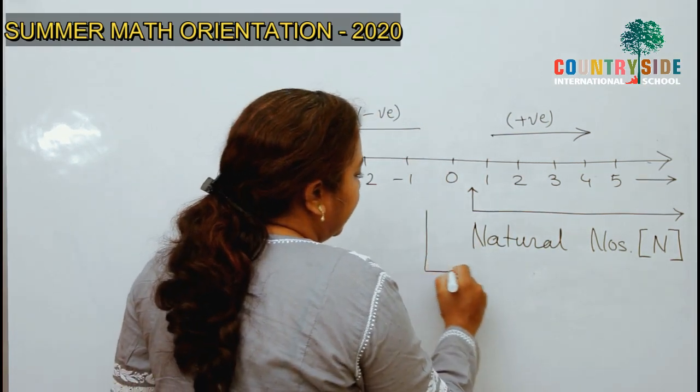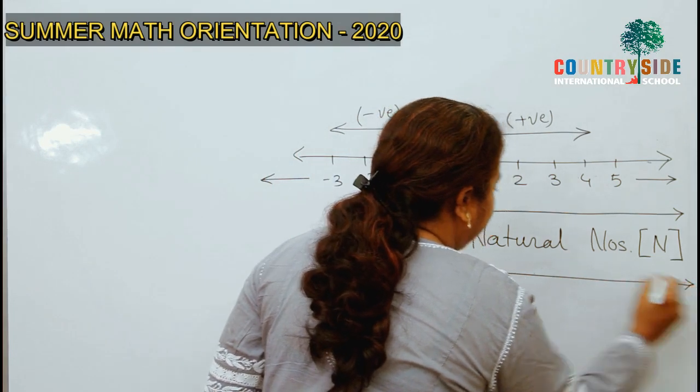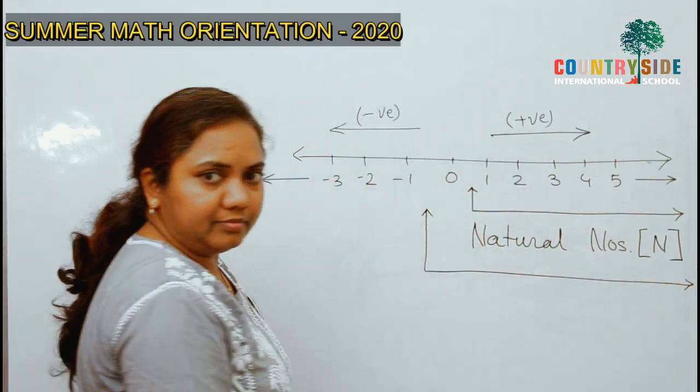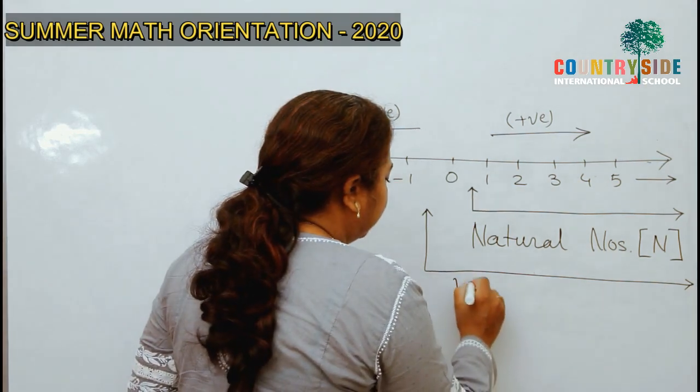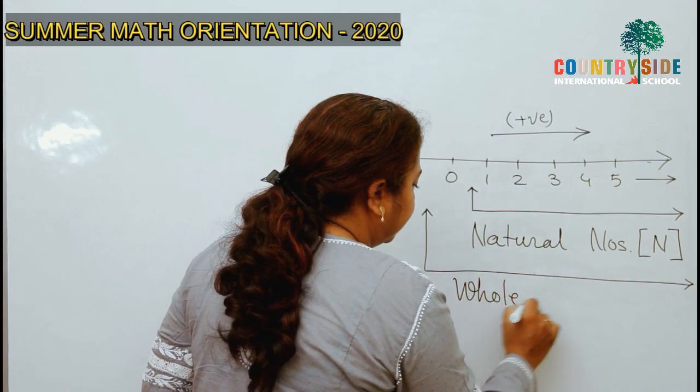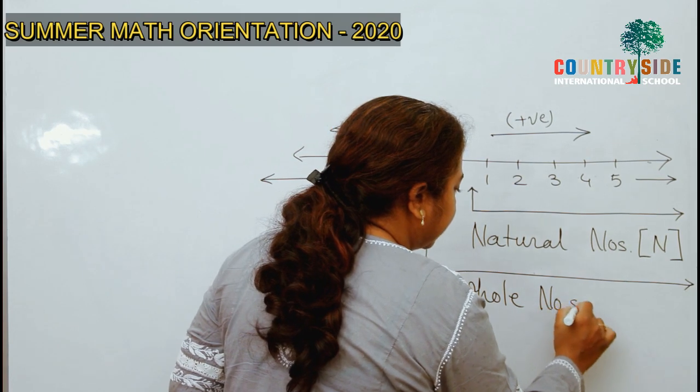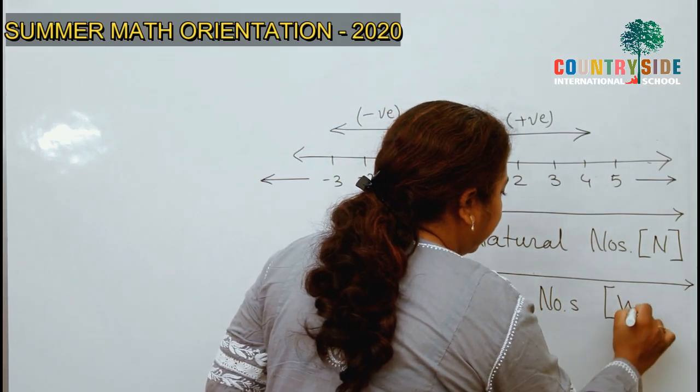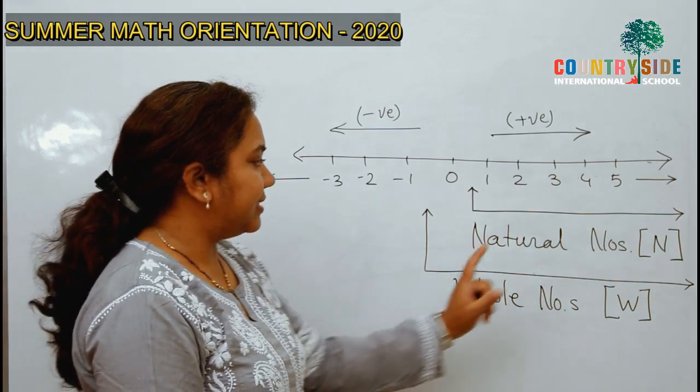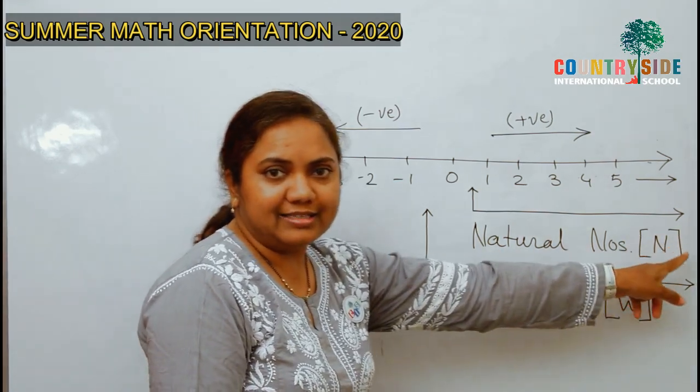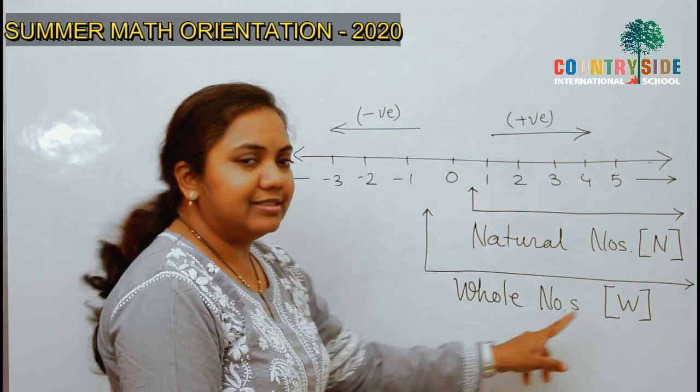Now, if I add one more number in that, 0. So, it will become whole numbers and that we will denote by W. So, two sets, natural numbers that is N and whole numbers that is W.